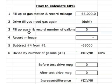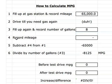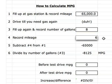Number three says fill up again and record the number of gallons used. Let's say we used eight gallons. And then number four says we have to record our mileage again. Let's say our ending mileage is 65,125 miles.